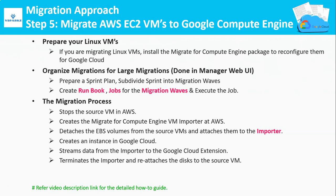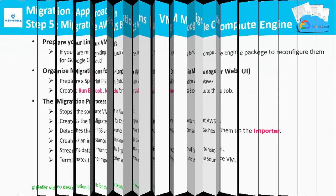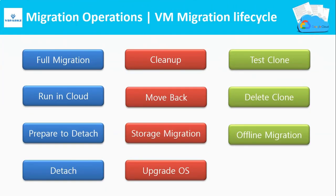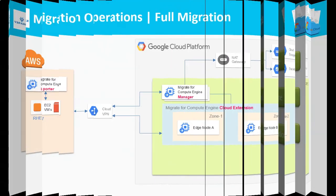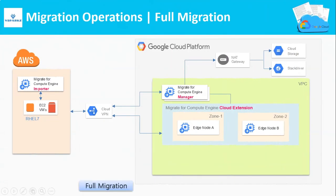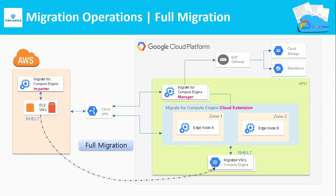People call these the VM Migration Lifecycle. These are the migration operations available with Migrate for Compute Engine. When you choose the migration operation as full migration in a job, at the end of this job, your source VM is fully removed from the source and it is fully migrated to Google Cloud Platform, assuming the source VM will work okay in GCP.